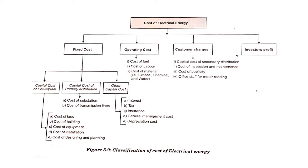The third part of fixed cost is interest, tax, insurance, general management, and depreciation cost. All three parts — capital cost of the power plant, capital cost of primary distribution, and other capital costs like interest, tax, insurance, and depreciation — will be added together and classified as fixed cost.